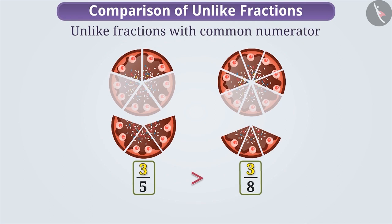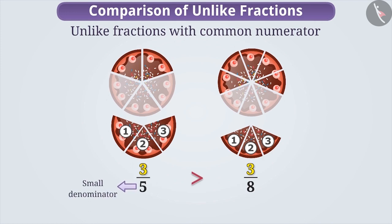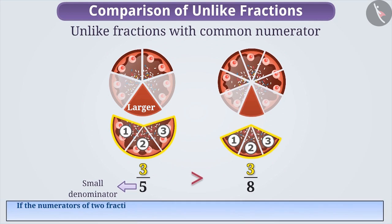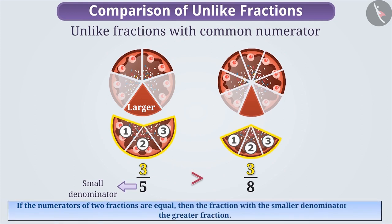But for the fraction whose denominator is smaller, the size of each piece will be bigger. Thus, the value of all the parts of this fraction is greater when compared to the parts of the other fractions. Therefore, for any two fractions, if the numerators are equal, then the fraction with the smaller denominator will be the greater fraction.